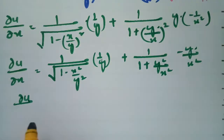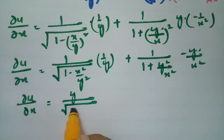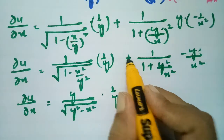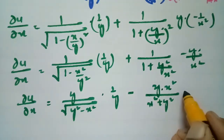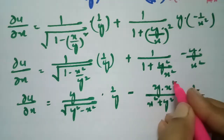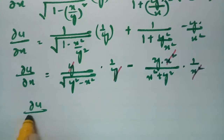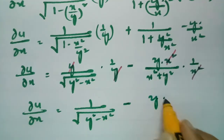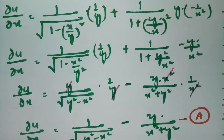Simplifying ∂u/∂x: bringing y to the numerator, after taking y square as LCM this becomes 1 by root over y square minus x square times 1 by y. For the tan inverse term, sending x square to the numerator gives 1 by x square plus y square times minus y. After cancelling, ∂u/∂x equals 1 by root over y square minus x square minus y by x square plus y square. This is equation A.